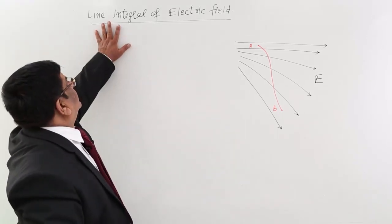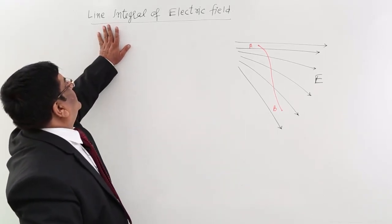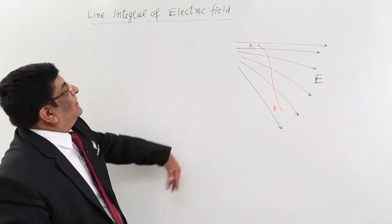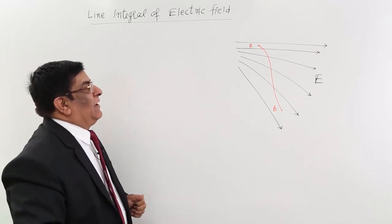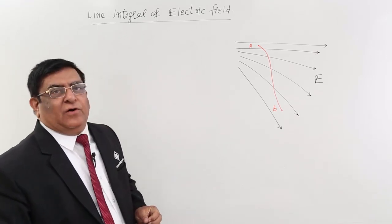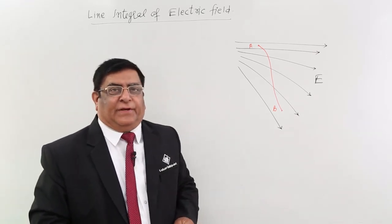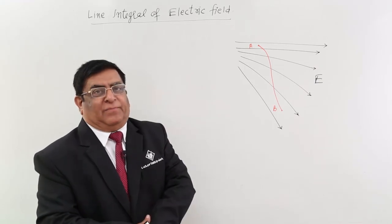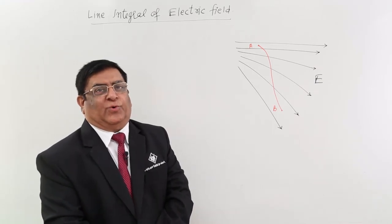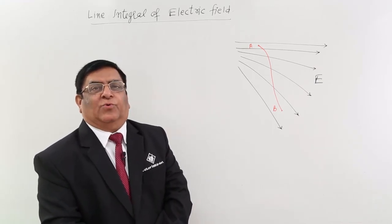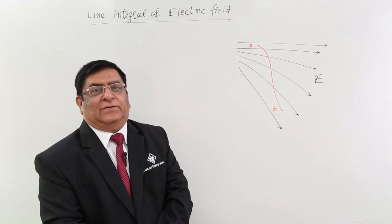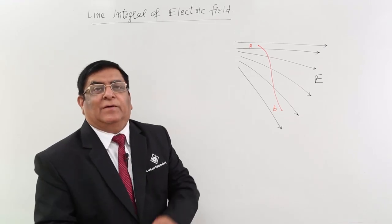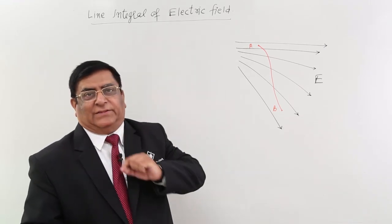We will study another term today: line integral of electric field. What does it mean? In line integral of electric field, there is a multiplication of two quantities — electric field and the length, a path length.